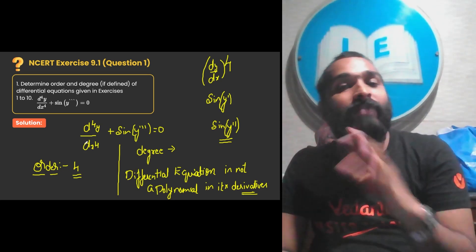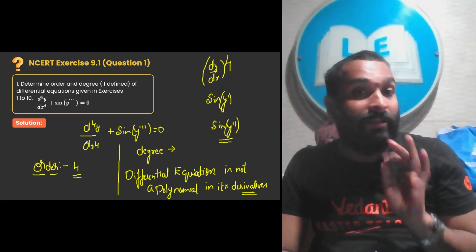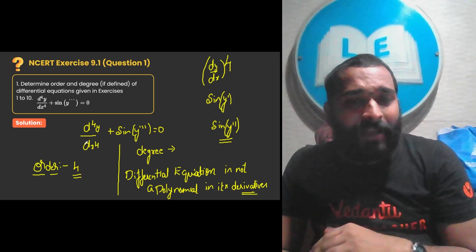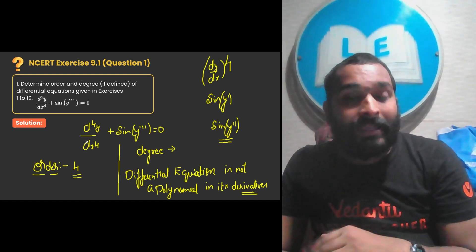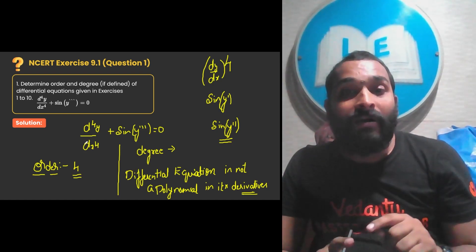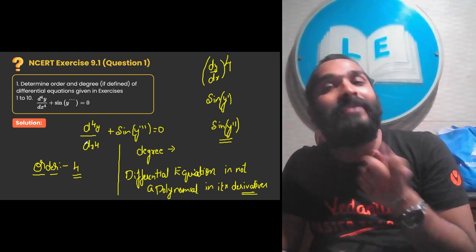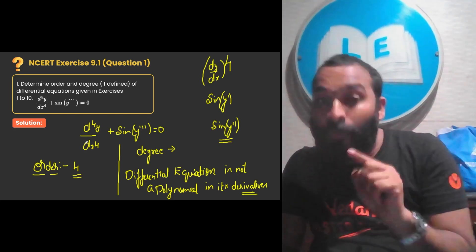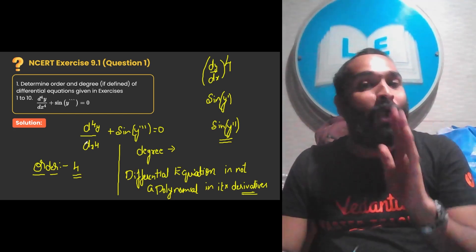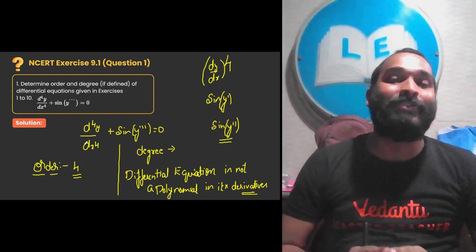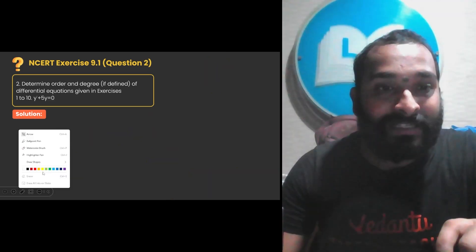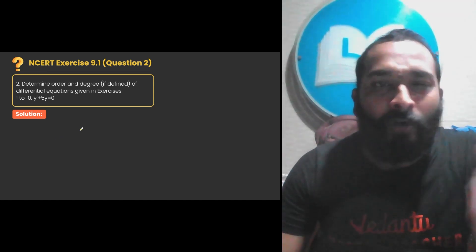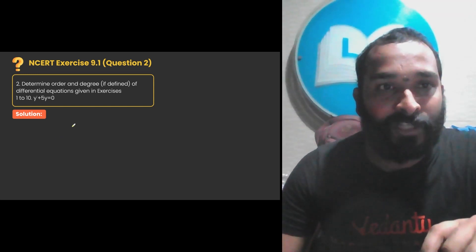So what do we write in that case? Degree is not defined and order is 4. I hope you have understood. Order is the highest derivative in the given differential equation, and you define degree only if it is not in the derivative form of some other function. Degree, if defined, is the power of the highest derivative.